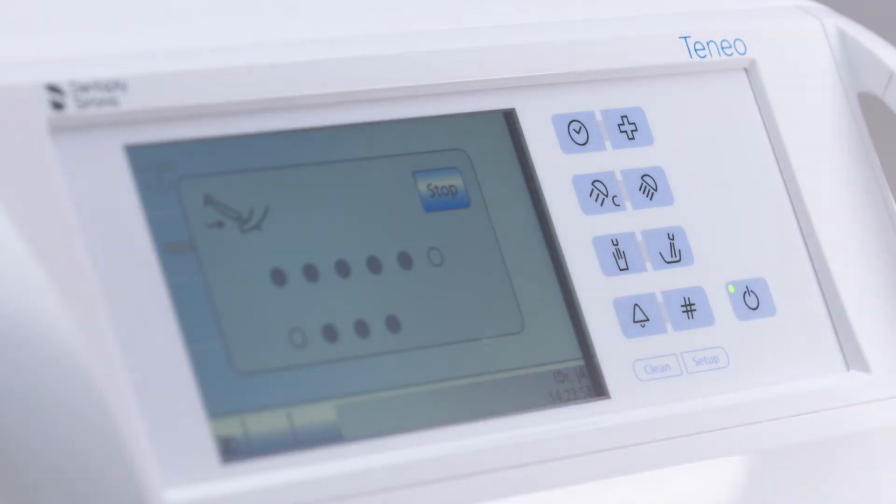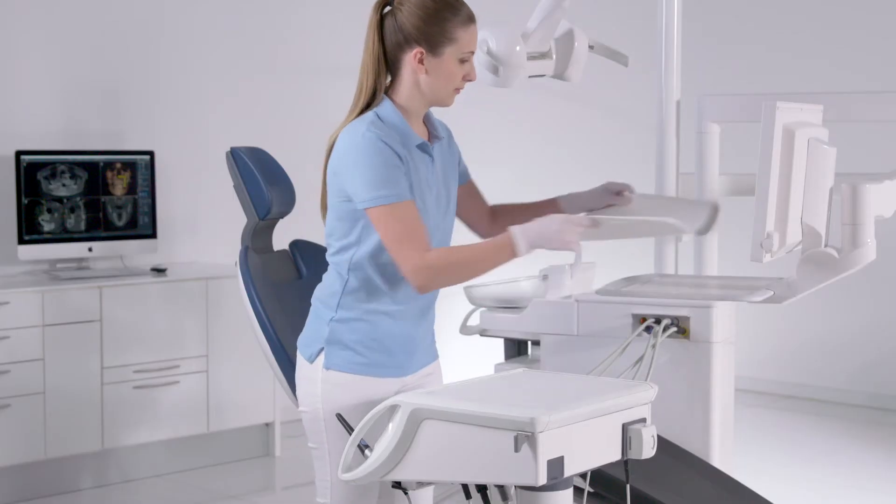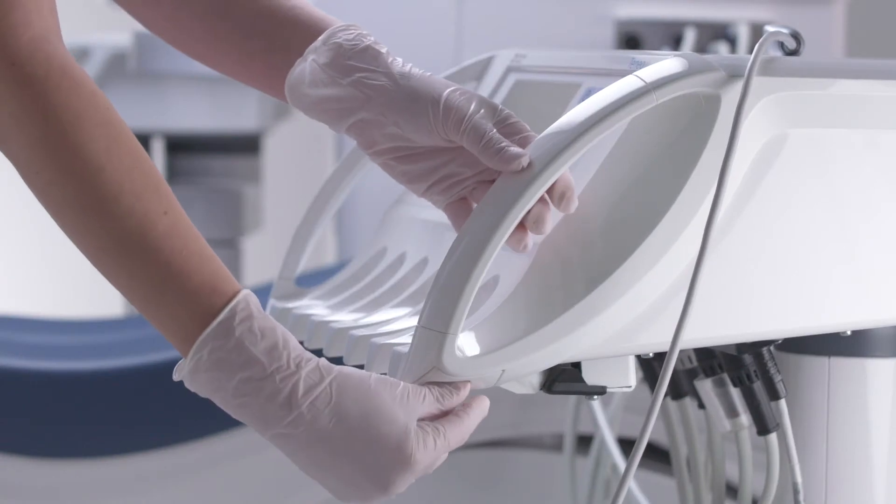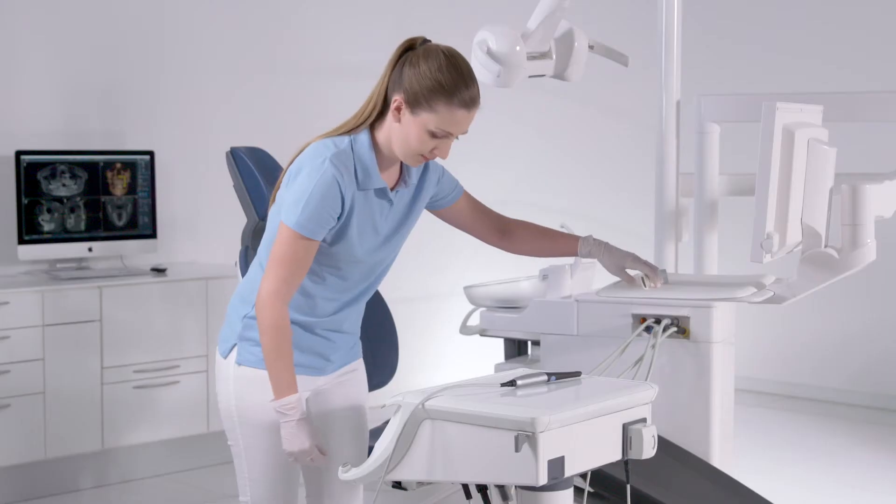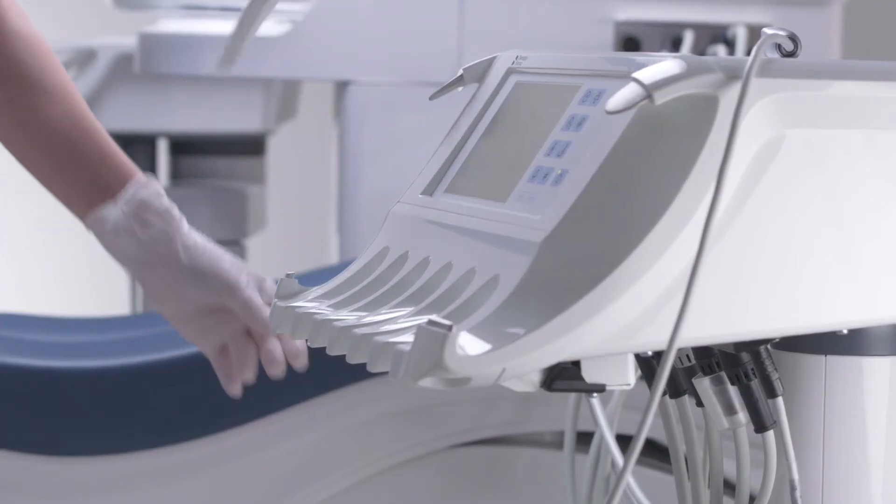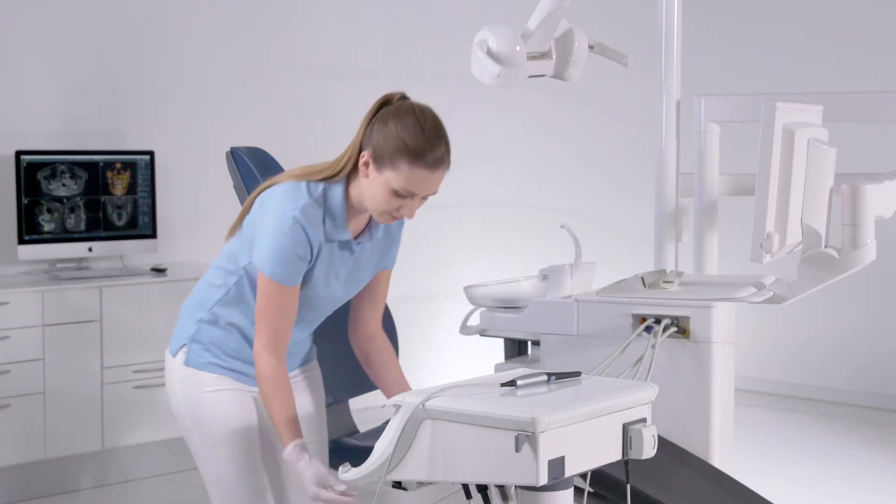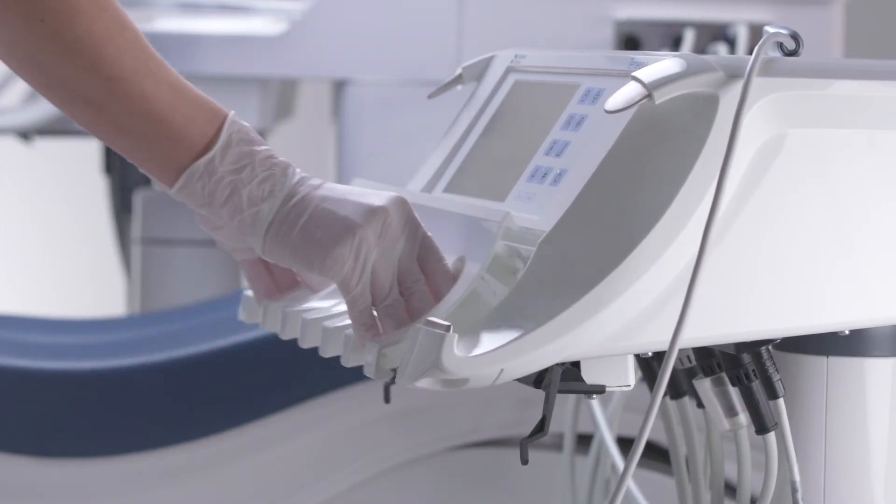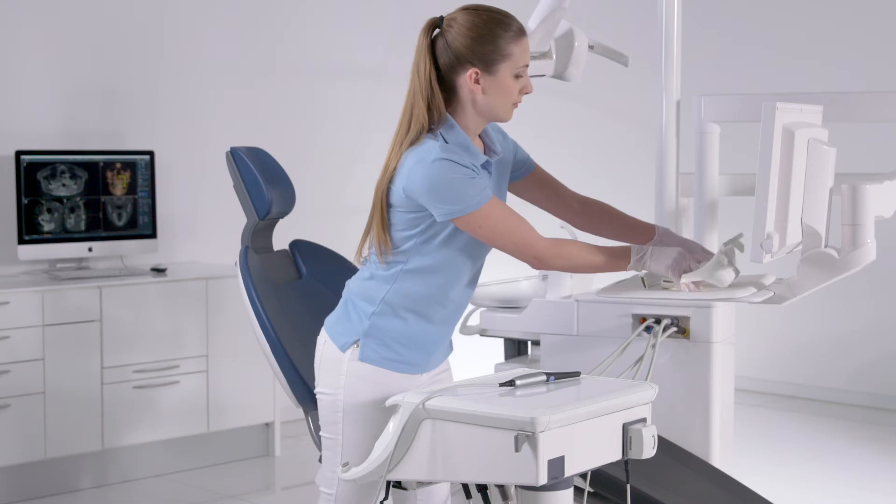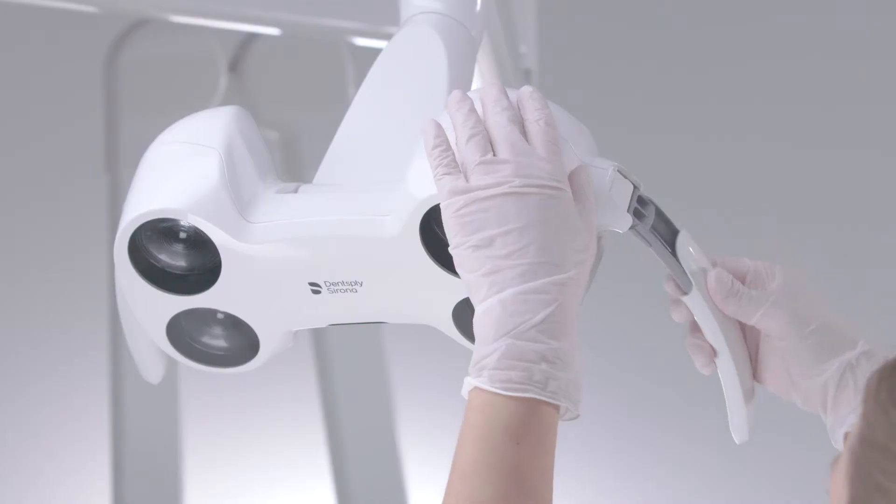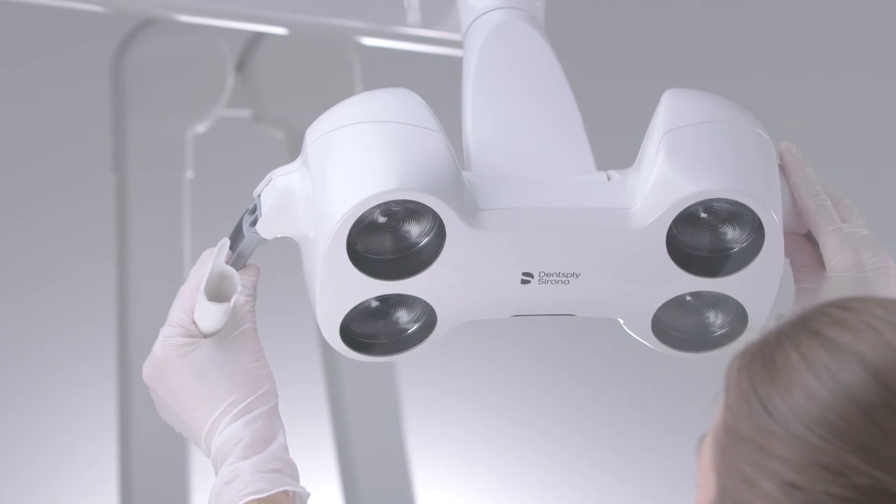Next, switch the treatment center off at the main switch. Remove all hygiene critical parts for reprocessing. The instrument holders on the dentist and assistant element, the handles of the dentist element, and the tray can all be thermo disinfected. The silicone pads and the handles of the operating light can be sterilized.